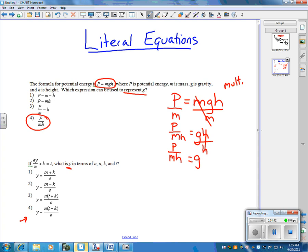And you can tell because all the answers over here all have Y equals. So I'm going to start by writing down the equation. Let's change colors here so we don't confuse one with the other. EY over N plus K equals T.